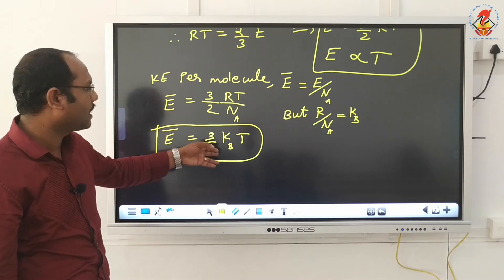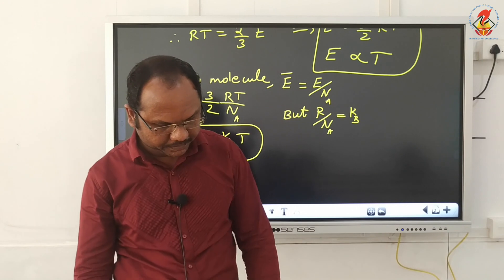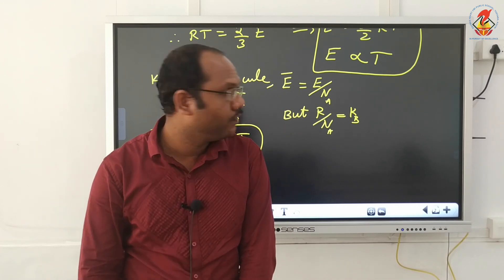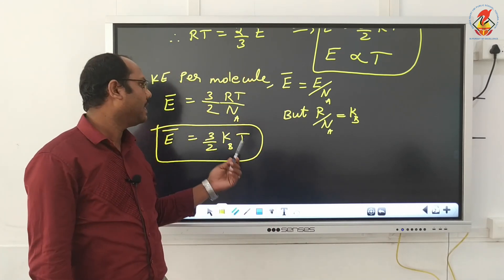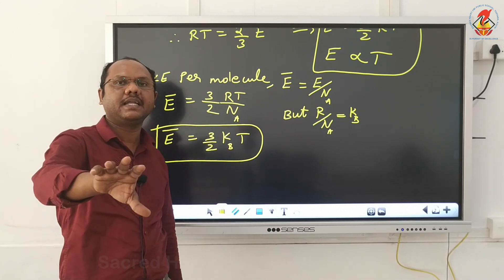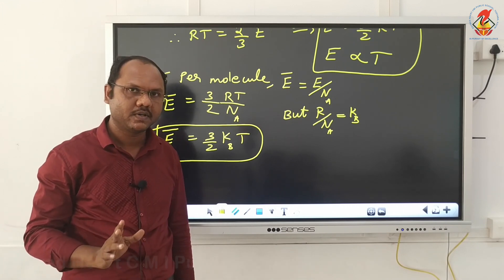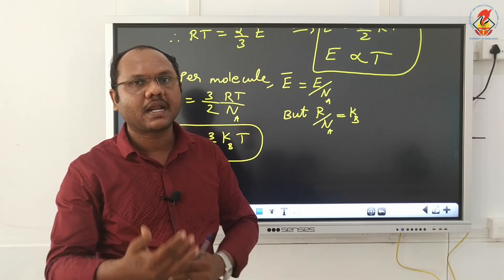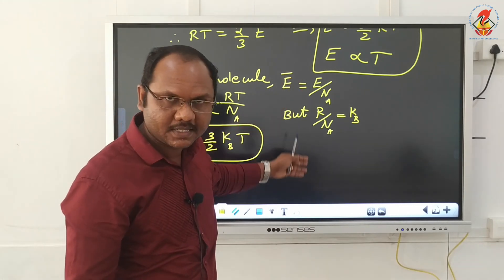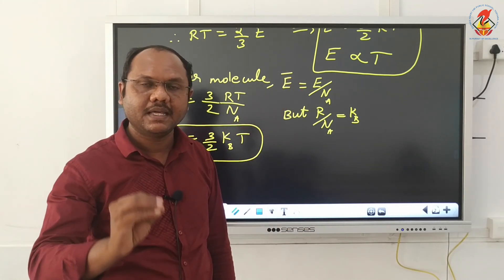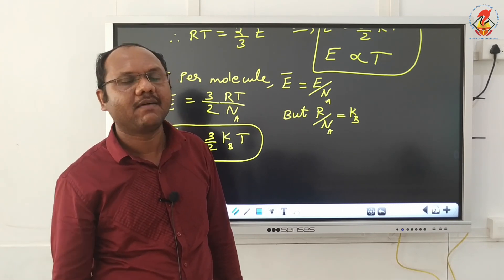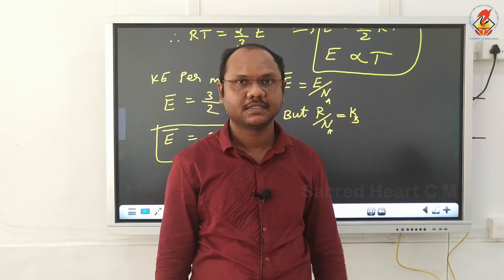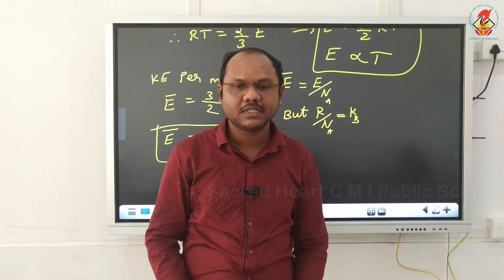The average kinetic energy per molecule is 3/2 k_B T. When temperature increases, average kinetic energy also increases, and therefore the velocity of gas molecules also increases. This is the kinetic interpretation of temperature: when temperature increases, the average kinetic energy per molecule increases and so does the velocity of gas molecules. That is all about this topic. Thank you.